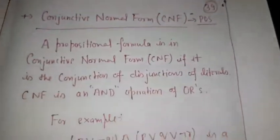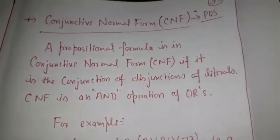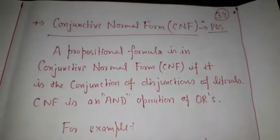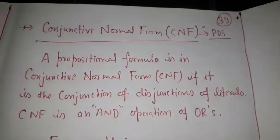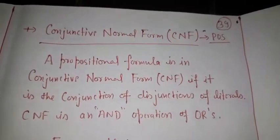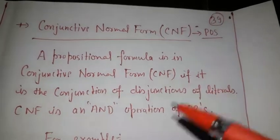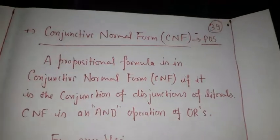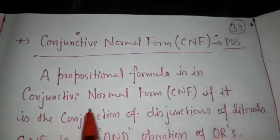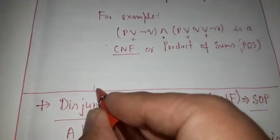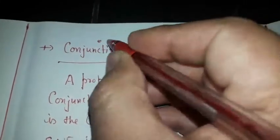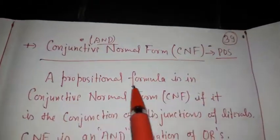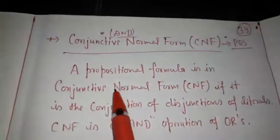There are two forms of propositional expression called the conjunctive normal form (CNF) and the disjunctive normal form (DNF). In digital electronics we learn two terms: sum of products and product of sums. These two forms are equivalent to those — CNF is equivalent to product of sums and DNF is equivalent to sum of products.